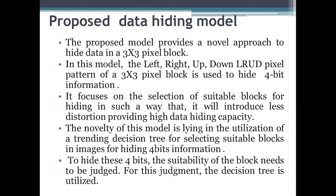The proposed data hiding model uses 3x3 pixel blocks. A novel approach to hide data in a 3x3 pixel block is proposed. In this model, the left, right, up, and down — referred to as LRUD — pixel patterns of the 3x3 pixel block are used to hide 4 bits of information. Usually, many techniques using 3x3 pixel blocks hide only 1 or 2 bits per block, but in this novel approach, 4 bits of information are hidden in one block. The model focuses on the selection of suitable blocks for hiding in such a way that it introduces less distortion while providing high hiding capacity. The novelty lies in the utilization of a decision tree for selecting suitable blocks in images for hiding 4 bits of information. To hide these 4 bits, the suitability of the block needs to be judged using the decision tree.